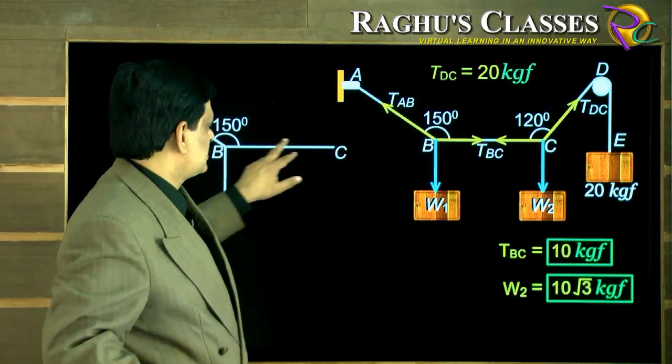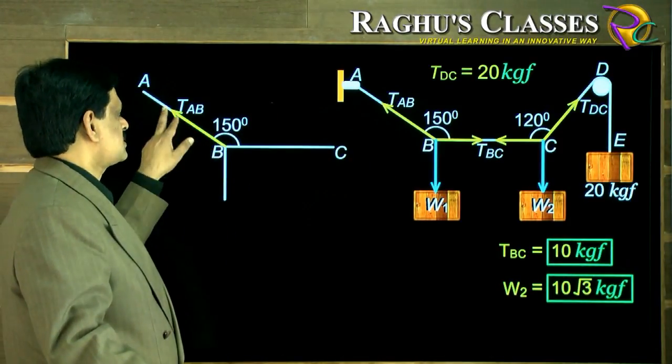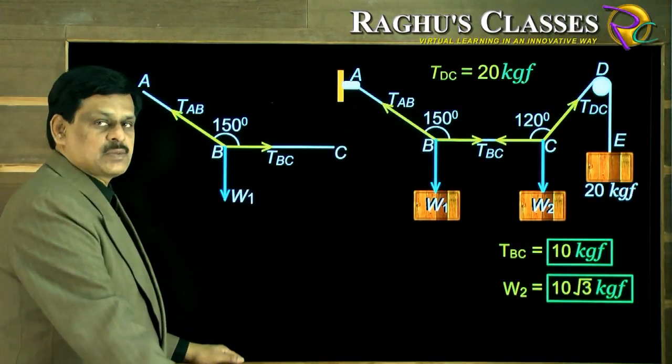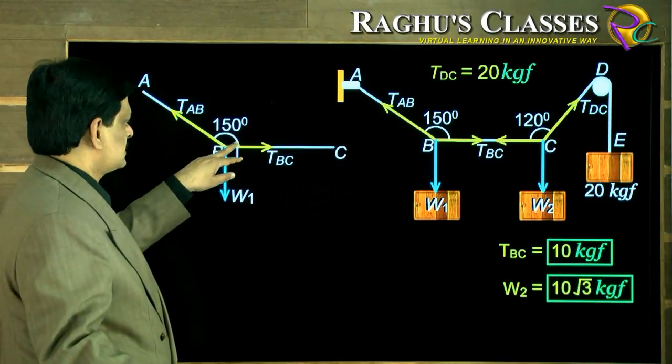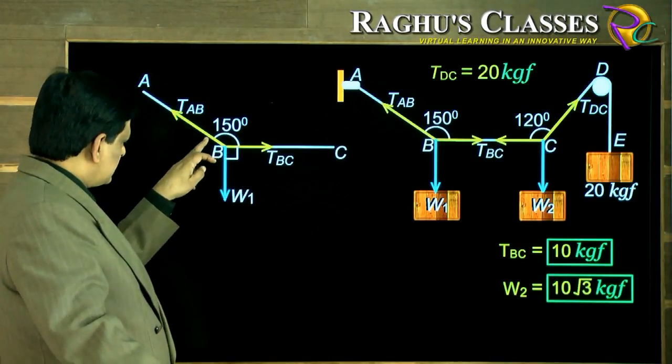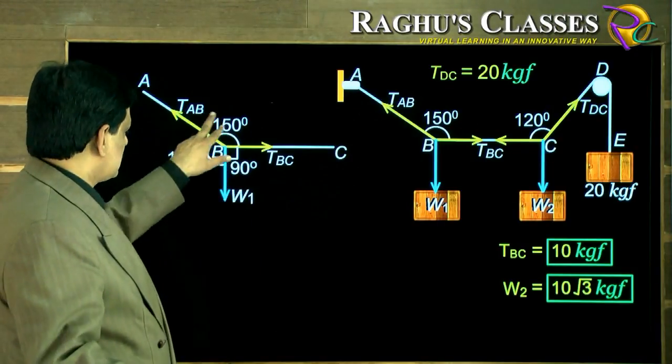Now let us go for the second junction here. Let us put the angles here. This is one force TAB, the other force is TBC, the third force is W1. This angle is 90, this is 150. So 150 means the remaining is 30; 30 plus 90 makes 120 degrees.